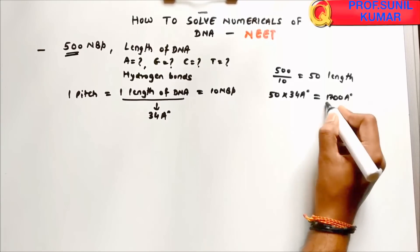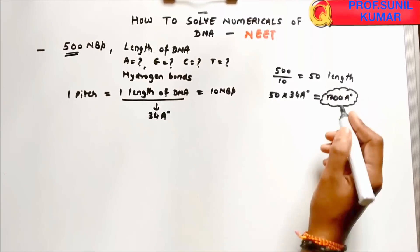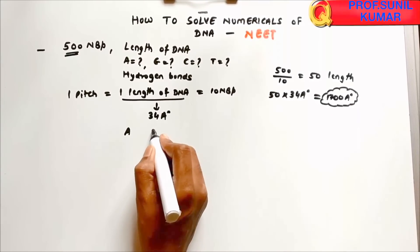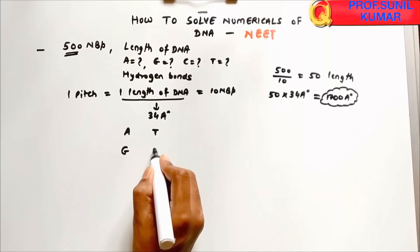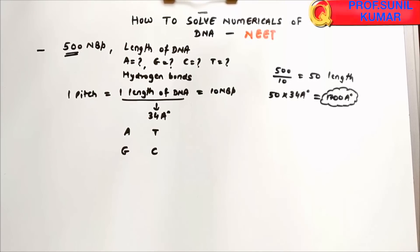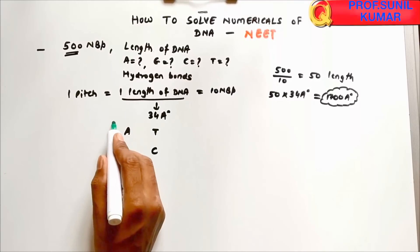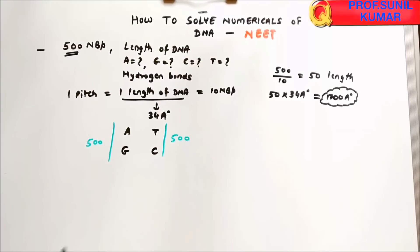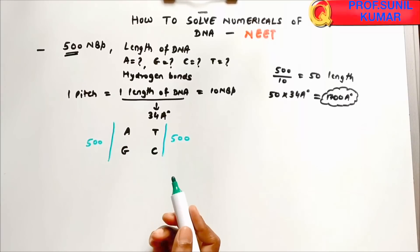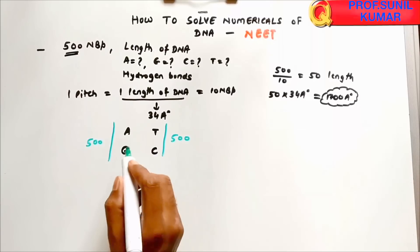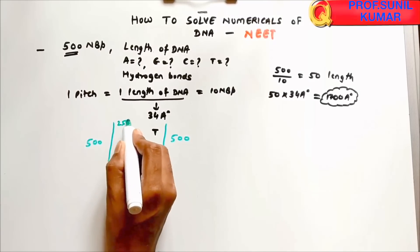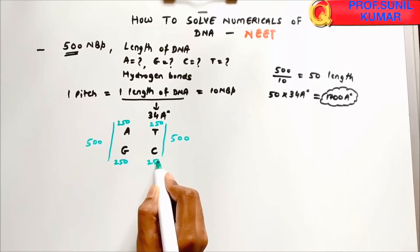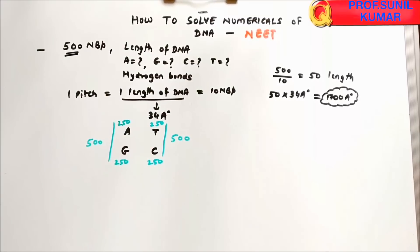The length of the DNA is 1,700 Angstroms. For the bases: 500 base pairs means each strand has 500 bases, so there are 1,000 bases total. Since A = T and G = C, adenine = 250, thymine = 250, guanine = 250, cytosine = 250.